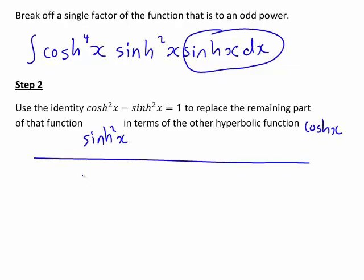If we rearrange that, we get negative sinh²(x) equal to 1 minus cosh²(x). Then multiplying through by minus 1, it becomes sinh²(x) equals cosh²(x) minus 1.